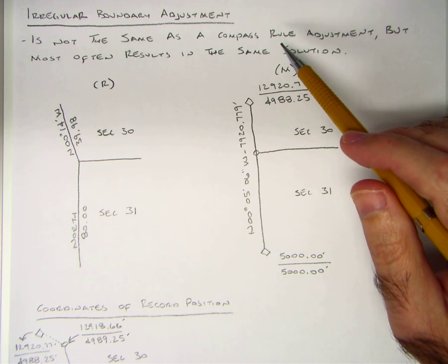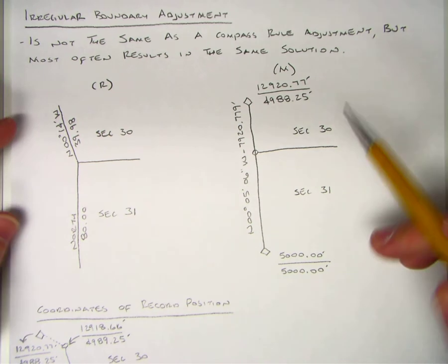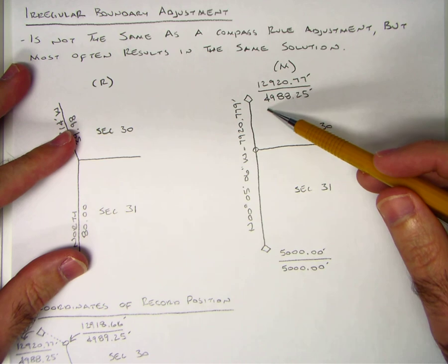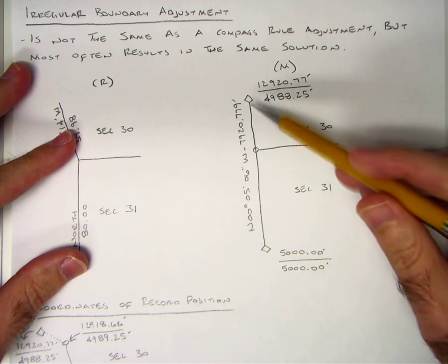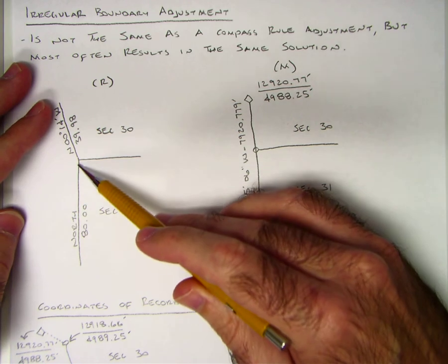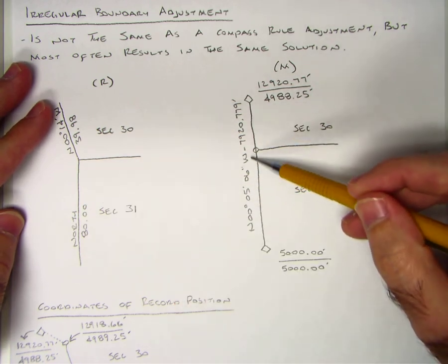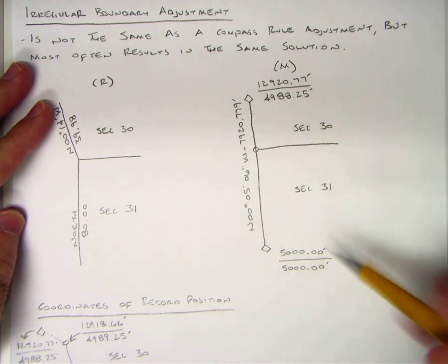What happens is you retrace the line and again your basis the bearings is astronomic, your distances are ground distance and you get a distance between the two found corners. But remember this corner here is lost of north zero degrees five minutes six seconds west 7920.779 feet and you get coordinates for the two points.